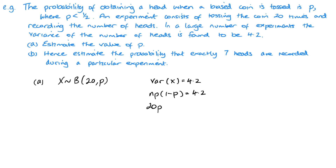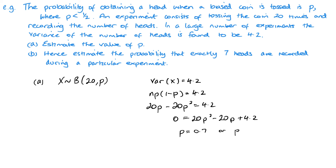With n = 20 we get 20p minus 20p² = 4.2, which rearranges to 20p² minus 20p plus 4.2 = 0. Solving this equation gives p = 0.7 or p = 0.3, and since p is less than a half, p must equal 0.3.